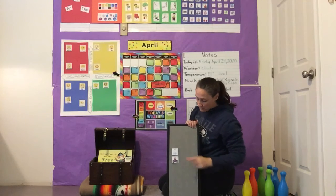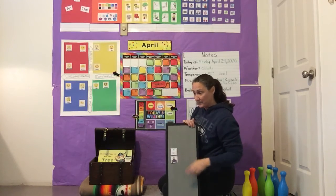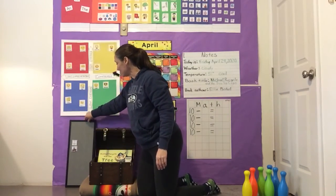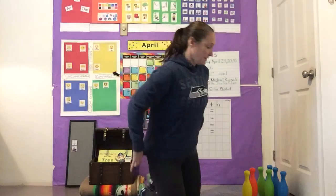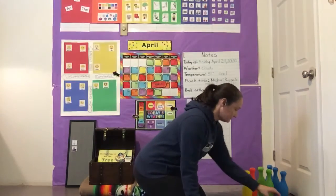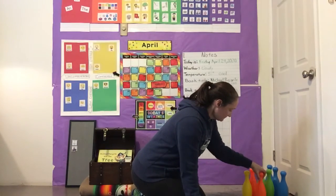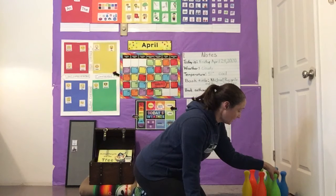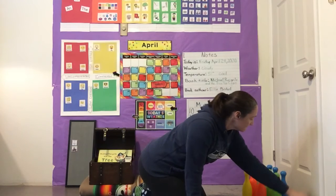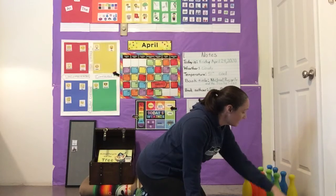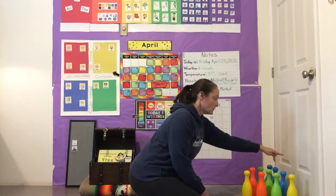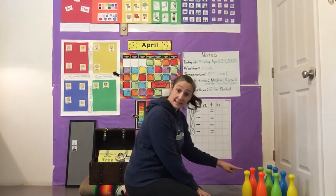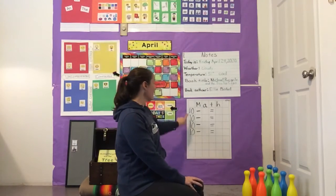We're moving on to our math game. We're going to see if Kona can leave the pins up because she likes to knock them down. We start with our 10 pins. Count them together: 1, 2, 3, 4, 5, 6, 7, 8, 9, 10. Our 10 pins are up.